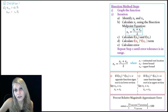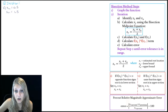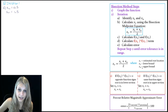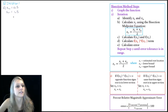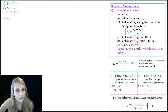Next we need to calculate the root estimate using the bisection midpoint equation, which I've expanded on down here in this blue box. So xr is our estimated root location, xl is the lower bound, and xu is the upper bound. We can just plug them in and we will get our root estimate.